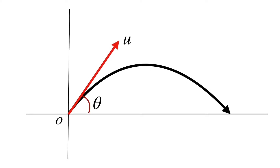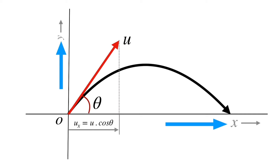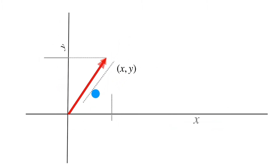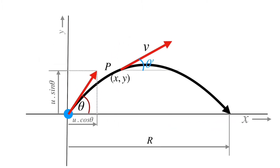A projectile is fired at angle theta with horizontal and velocity u. This projectile motion can be considered as a combination of two independent motions in x and y direction. The component of u in x direction is ux and in y direction it is uy. At time t, the location of the projectile is (x, y) and its velocity v makes an angle theta-dash with horizontal, having horizontal component vx and vertical component vy.